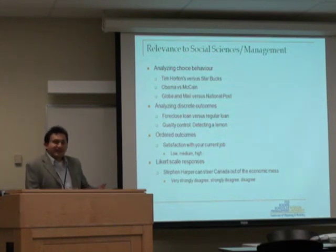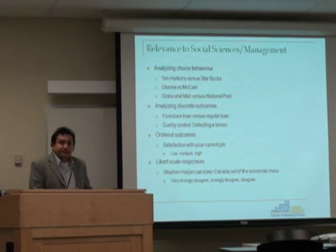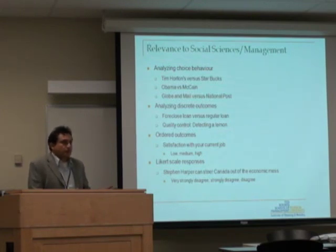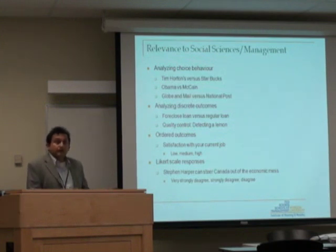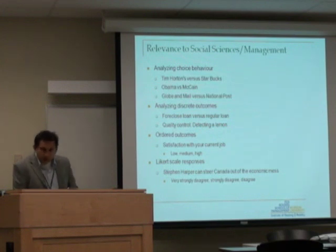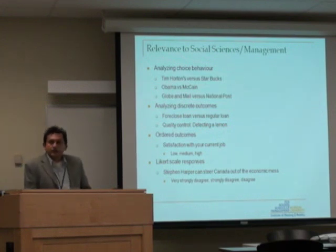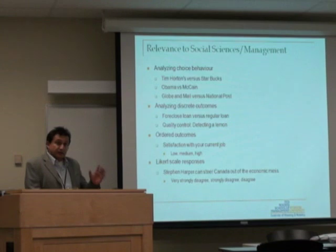You could also have categorical data that has some order in it. For example, how many kids would a household have — 0, 1, 2 or more. And where I come from, 0, 1, 2, 3, 4, 5, 6, 7 or more. So all these choices are part of categorical data.